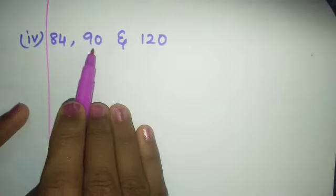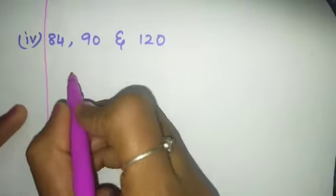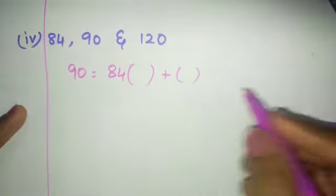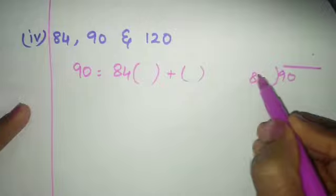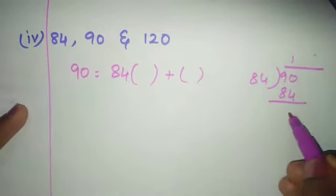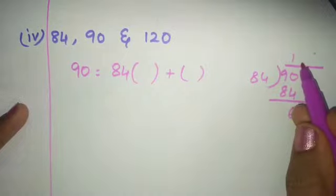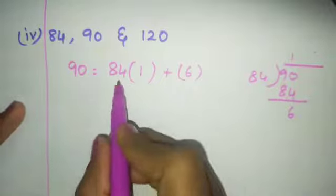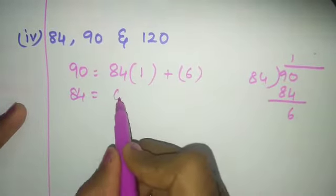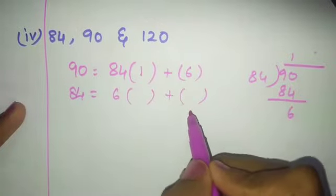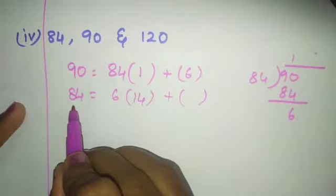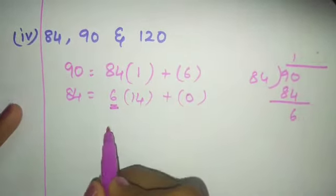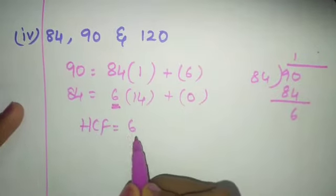First do 90 and 84. Divide 90 by 84: 84 × 1 is 84, remainder is 6. So quotient is 1 and remainder is 6. Now 84 = 6 × 14 + 0. 6 × 14 is 84, so remainder is 0. HCF of 84 and 90 is 6.